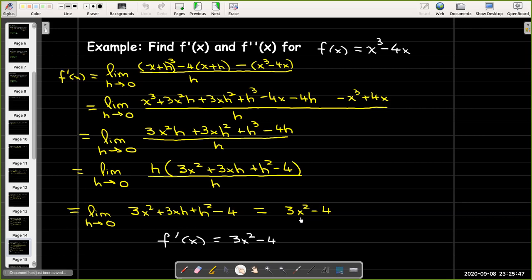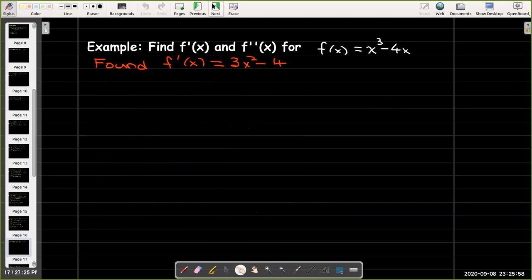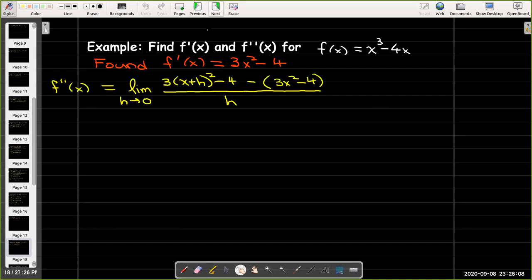So we found f'(x), the first derivative of f(x), equals 3x² - 4. Now let's find the second derivative. That would be the derivative of the derivative. So we go back to our limit definition: the limit as h goes to 0 of [f'(x+h) - f'(x)]/h.